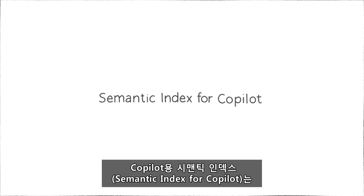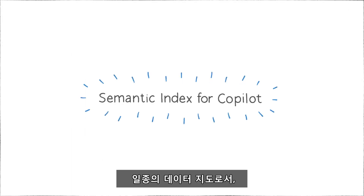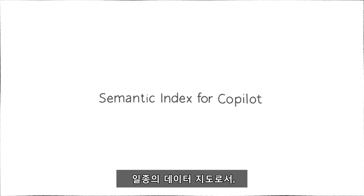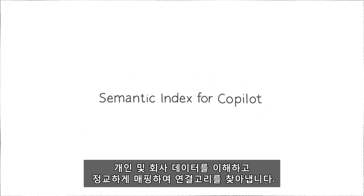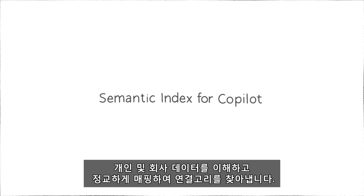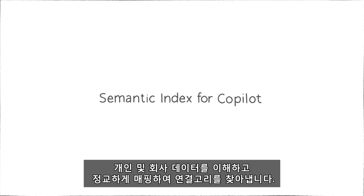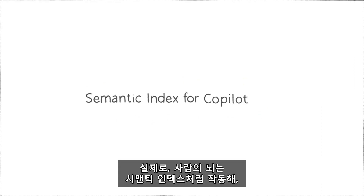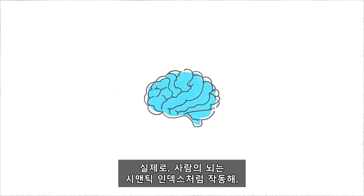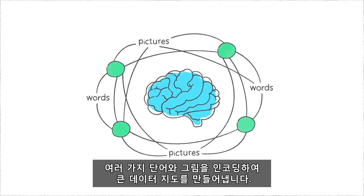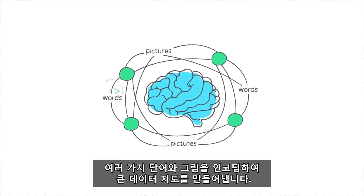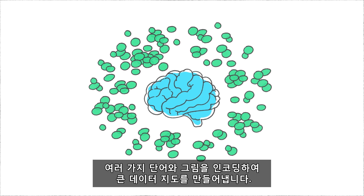Semantic Index for Copilot creates a sophisticated map of your personal and company data, identifying relationships and making important connections. In fact, your brain works like a semantic index by encoding multiple words and pictures to create a larger conceptual map of information.